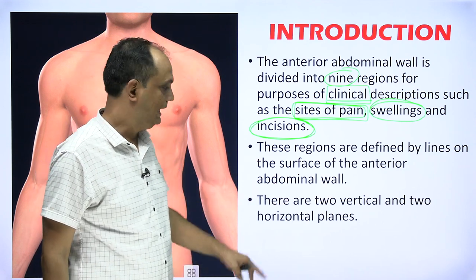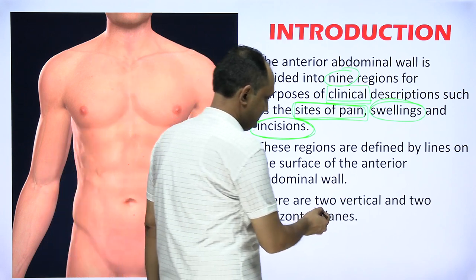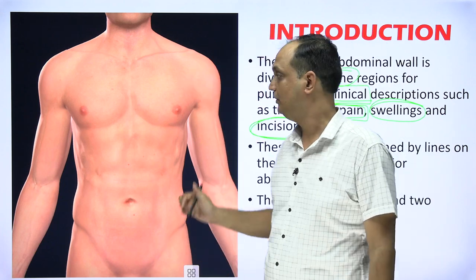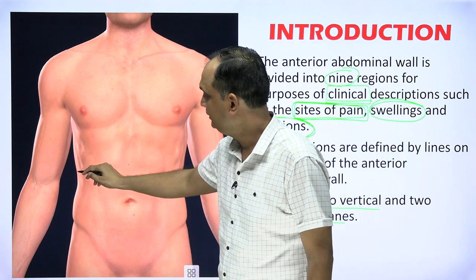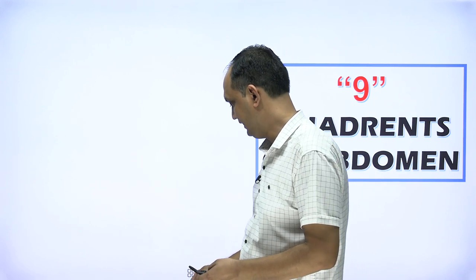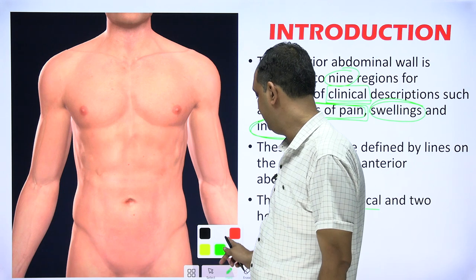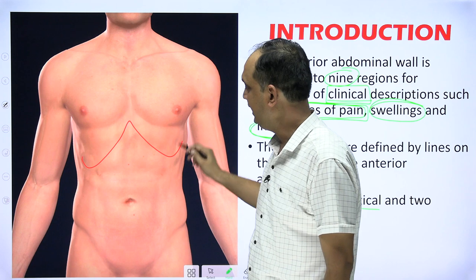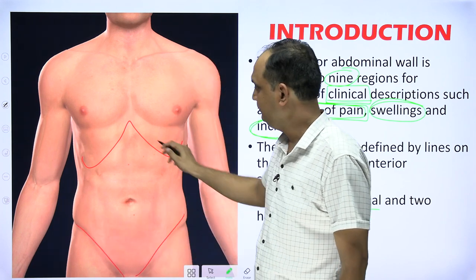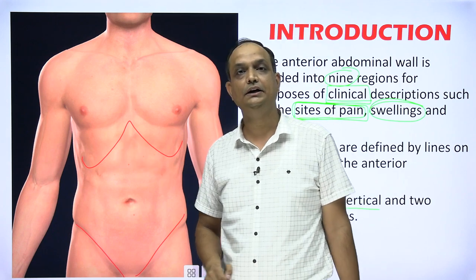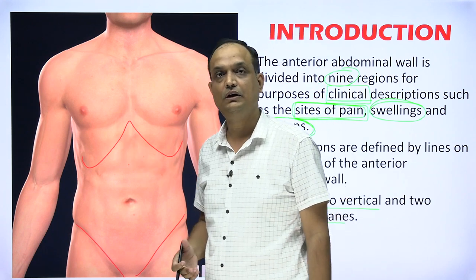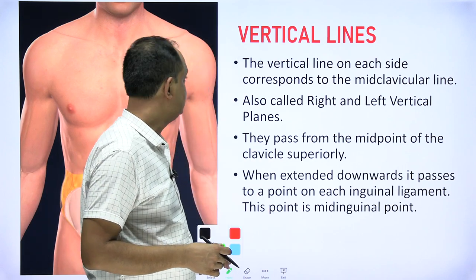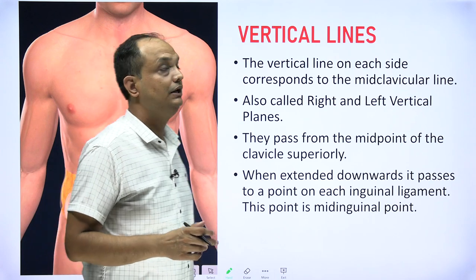These regions are defined by lines on the surface of the anterior abdominal wall — two vertical lines and two horizontal lines. The anterior abdominal wall starts from the subcostal area and extends to the inguinal region. In between this whole area, we divide the anterior wall into different quadrants. The two vertical lines are the first to define.